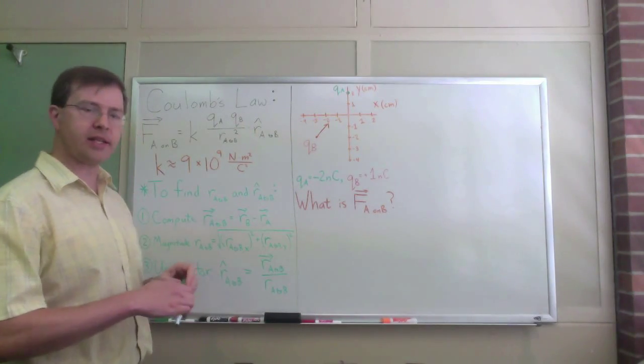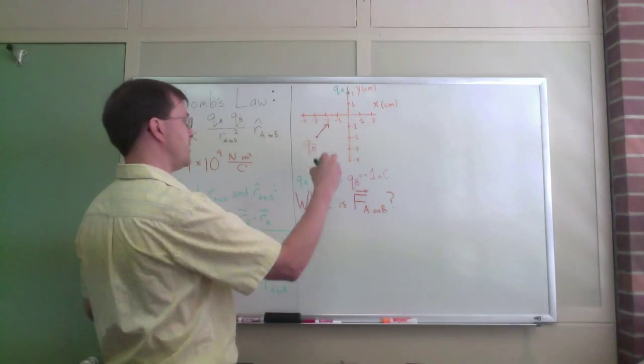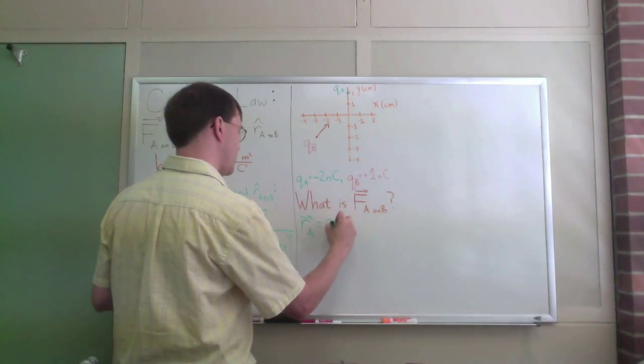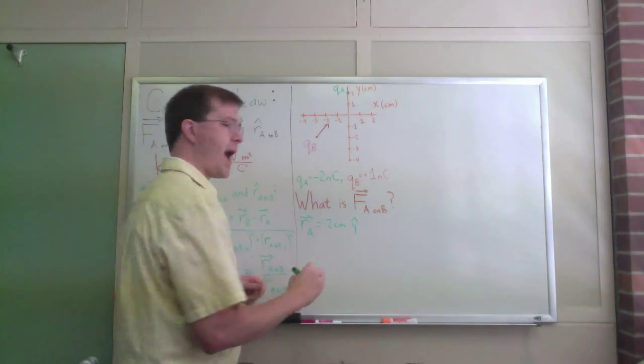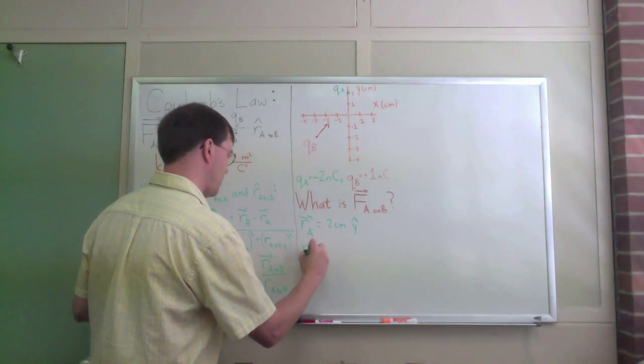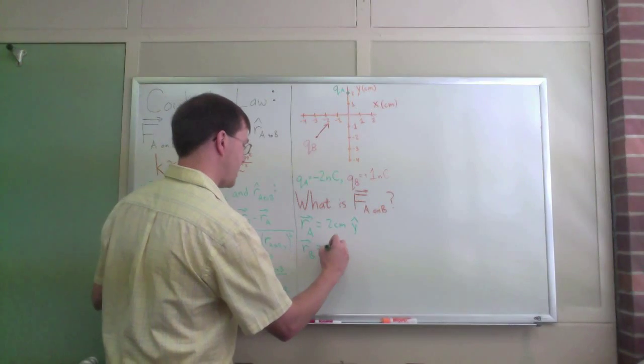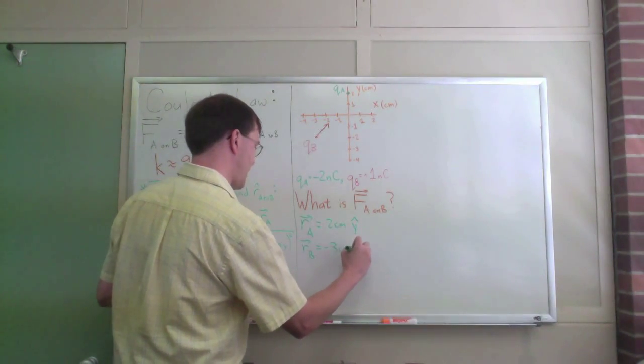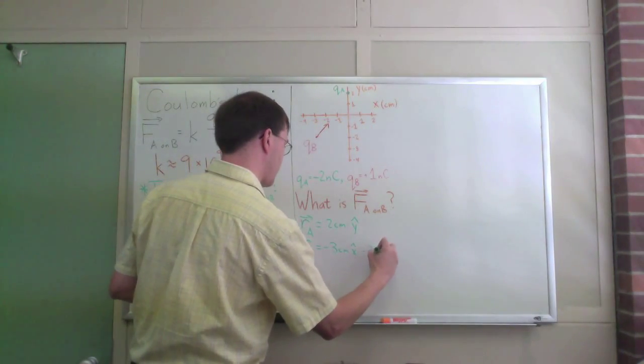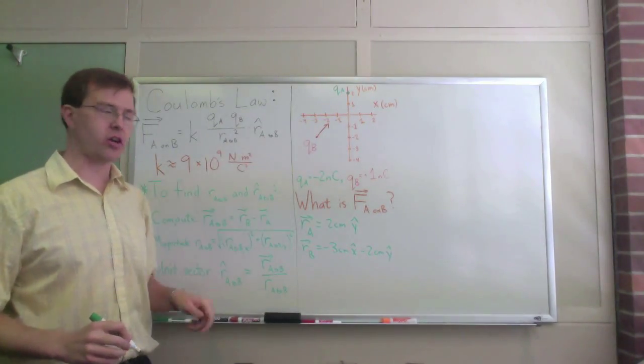It's final minus initial. Final point minus initial point. Target point minus source point. So it's going to be the position of B in your coordinate system, minus the position vector of A in your coordinate system. What does that mean for us? Well, I can say that r a in my coordinate system is, there's no x component, so it's entirely 2 centimeters times the y hat unit vector, the coordinate unit vector. r b in this problem, well, there is an x component on it, it's minus 3 centimeters x hat minus 2 centimeters y hat.